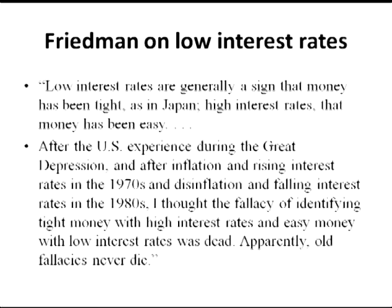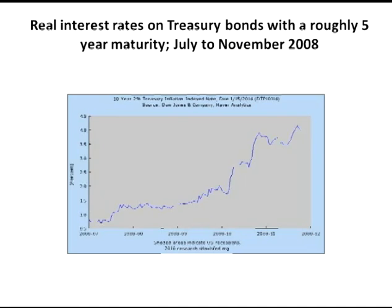Some economists will say that nominal interest rates can be misleading, but certainly real interest rates are a useful indicator of monetary policy. Well, even real interest rates aren't very reliable, but let's say they are. Here's a graph that shows real interest rates from about July to late November 2008, on five-year treasury bonds in the United States. The real interest rate went from barely over half a percent to more than four percent in a period of only about five months. So if we are going to argue that real interest rates are the right indicator, money was extremely tight — an unprecedented tightening of monetary policy — and yet most economists I talk to don't even know that real interest rates rose sharply in the second half of 2008, which suggests they're really mostly focusing on nominal interest rates.